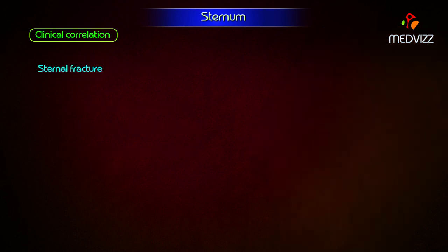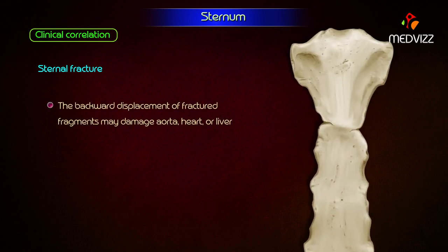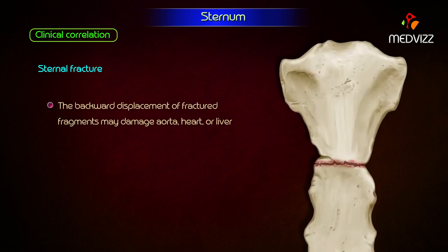Sternal fracture. It is commonly seen in automobile accidents, when the driver's chest hits against the steering wheel. The sternum is often fractured at the sternal angle. The backward displacement of the fractured fragments may damage the aorta, heart, or liver, and can cause severe bleeding which may be fatal.